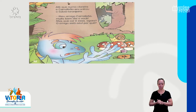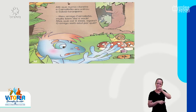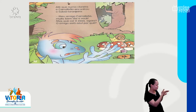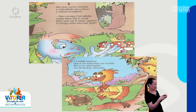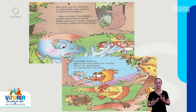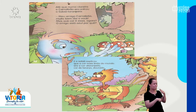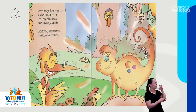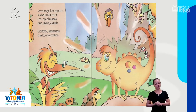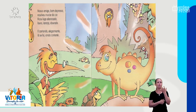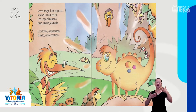Até que numa clareira, o camaleão encontrou o sabiá laranjeira. Meu amigo camaleão, muito bom dia a você! Mas que cor é essa agora? O amigo está azul por quê? E o sabiá explicou que é a cor mais linda do mundo, era a cor alaranjada, cor de laranja dourada. Nosso amigo, bem depressa, resolveu mudar de cor. Ficou logo alaranjado, loiro laranja dourado. E cantando alegremente, lá se foi ainda contente.